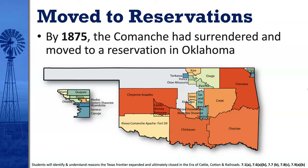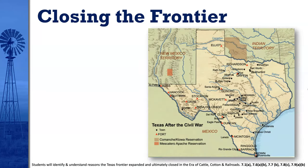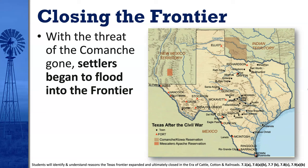With the threat of the Comanche gone, settlers began to flood into the frontier. As the Comanche and the Kiowa moved out of this area, more and more American settlers moved in and filled the area with farms and ranches.